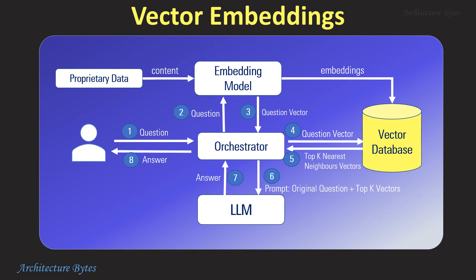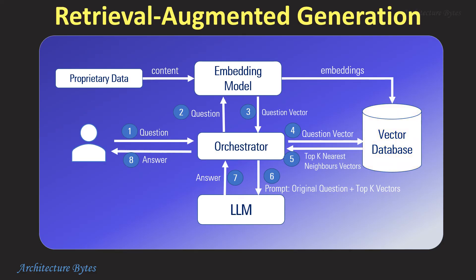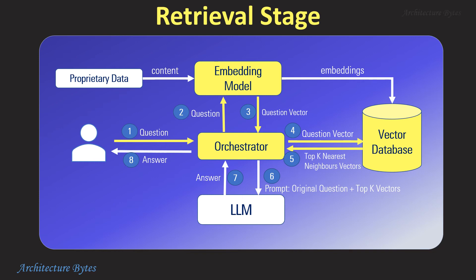You can think of vector embeddings as a form of compression — a way of capturing the essence of an object in a format that machines can work with. With respect to languages, embeddings enable us to quantify the semantic similarity between words or sentences, which helps with retrieving the most relevant data for the user question. Retrieval Augmented Generation happens in two stages: retrieval and generation. The retrieval stage uses a separate model to search through a database of pre-compiled vector embeddings based on the user query to find the most relevant information.